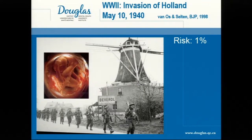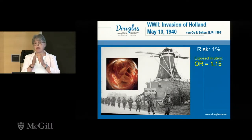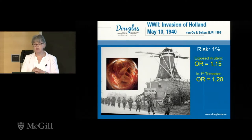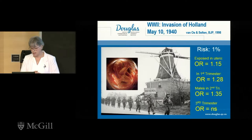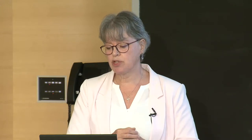Decades after the war, Jim van Aas and Selten looked at psychiatric records in the Netherlands to see if the stress of the invasion increased risk for schizophrenia. The risk for schizophrenia across the world is about 1%. They found that those exposed in utero had a 15% increased risk. If exposed in the first trimester, risk increased to 28%. For males exposed in the second trimester, risk went up by 35%, with no particular increase for third trimester exposure.